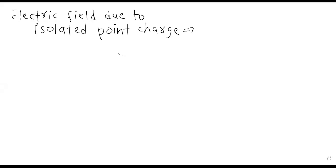Previously we have discussed the electric field — electric field ek aisi space ya region ka naam hota hai jis par ek charge kisi doosri charge par electrostatic force of attraction ya repulsion experience karegi. Uski fundamental equation hum padh chuke hain: electric field barabar hogi F divided by q naught. F hota hai electrostatic force, E is called the electric field intensity, aur q naught ko hum ne test charge kaha tha.